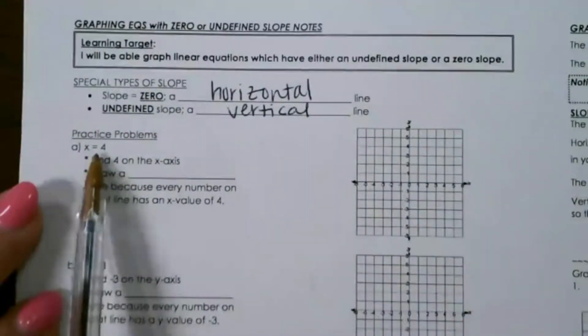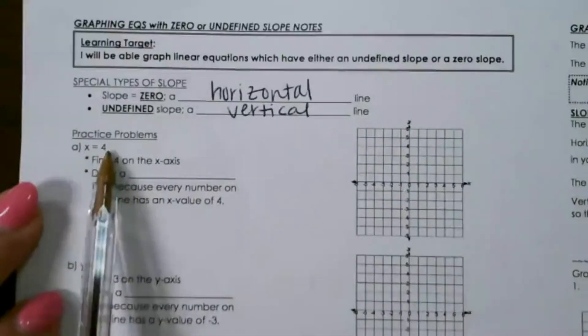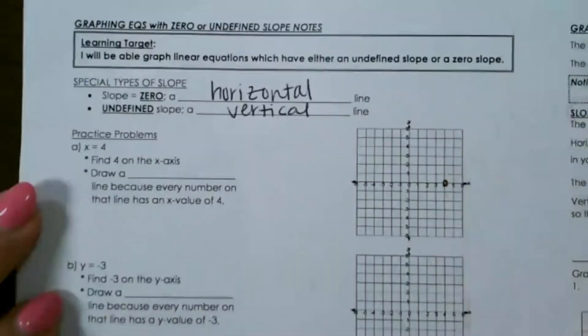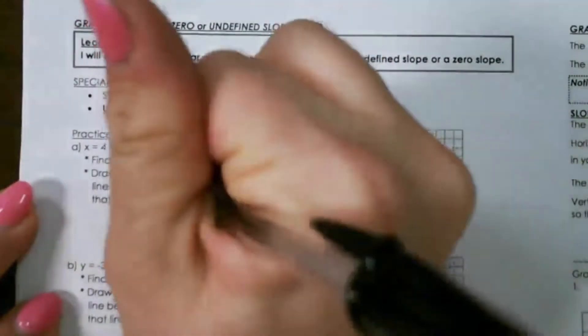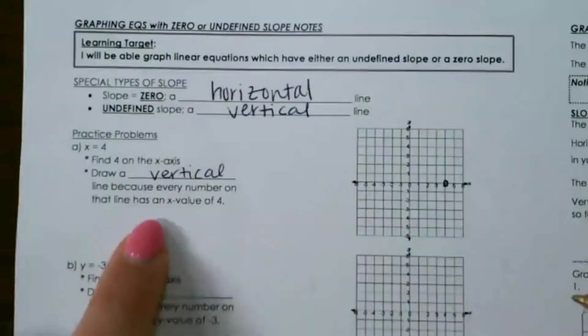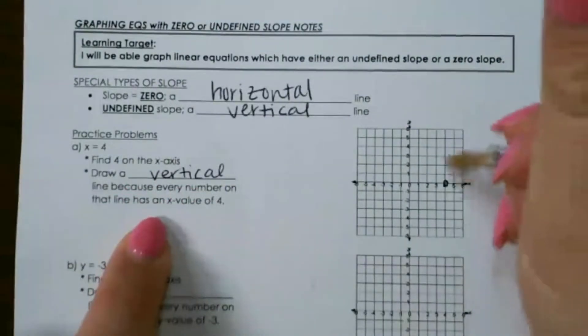So our first one, if our equation is x equals 4, we have to find 4 on the x-axis. And I'm going to put a point there, and then we draw a vertical line because every number on that line is going to have an x value of 4.